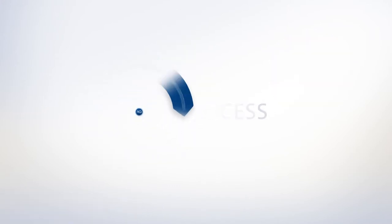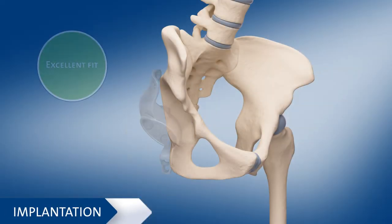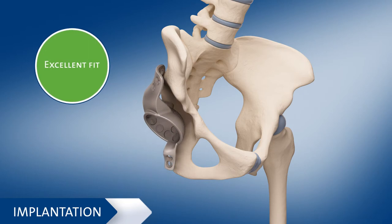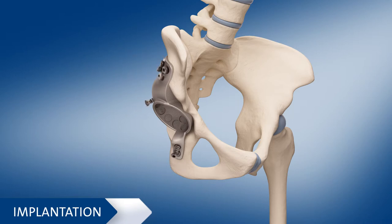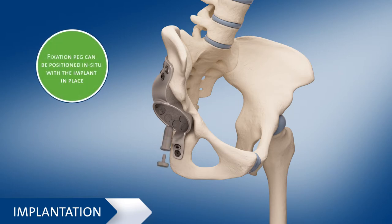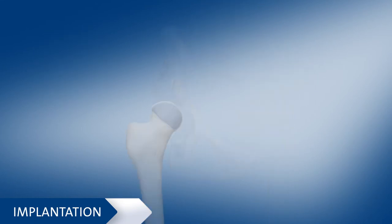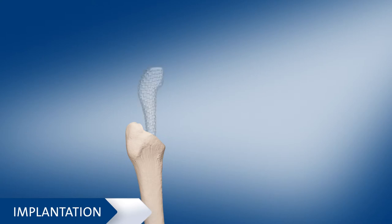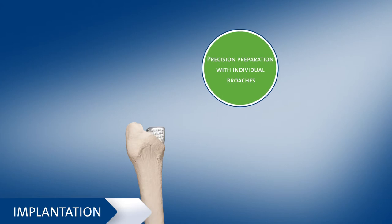Implantation is the final step of the AQI process. The individual hemipelvic prosthesis perfectly fits into the specific pelvic anatomy of the patient and is fixed with screws in the tab holes. The iliac peg is implanted with the hemipelvic prosthesis in place. Individual broaches allow for a precise preparation of the femoral cavity.